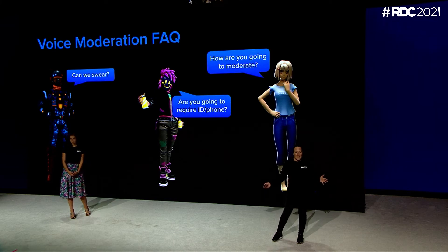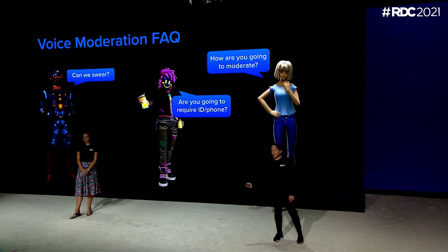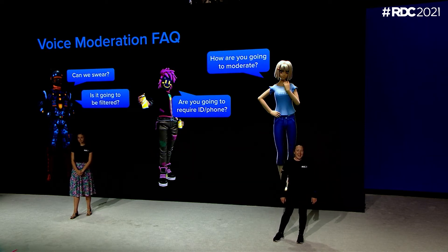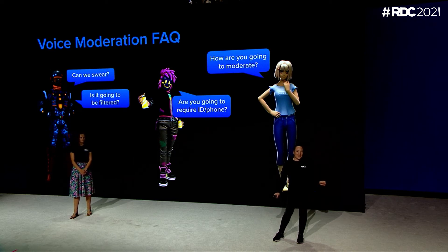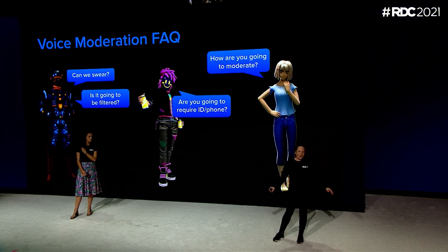Will you require phone and ID? Short answer: yes. RDC participants, you've all been pre-approved — we literally know you're real people because you're here right now. But for most other accounts, we're asking people to validate either a phone number if they have a long history on the platform, or an ID for most of the general public during beta. And finally: is it going to be filtered? Short answer: no. Voice filtering in real time is a super hard technical challenge and will not be the same as text filter. Voice is a free communication platform kept safe through moderation, community self-enforcement, and validating that users are real people.